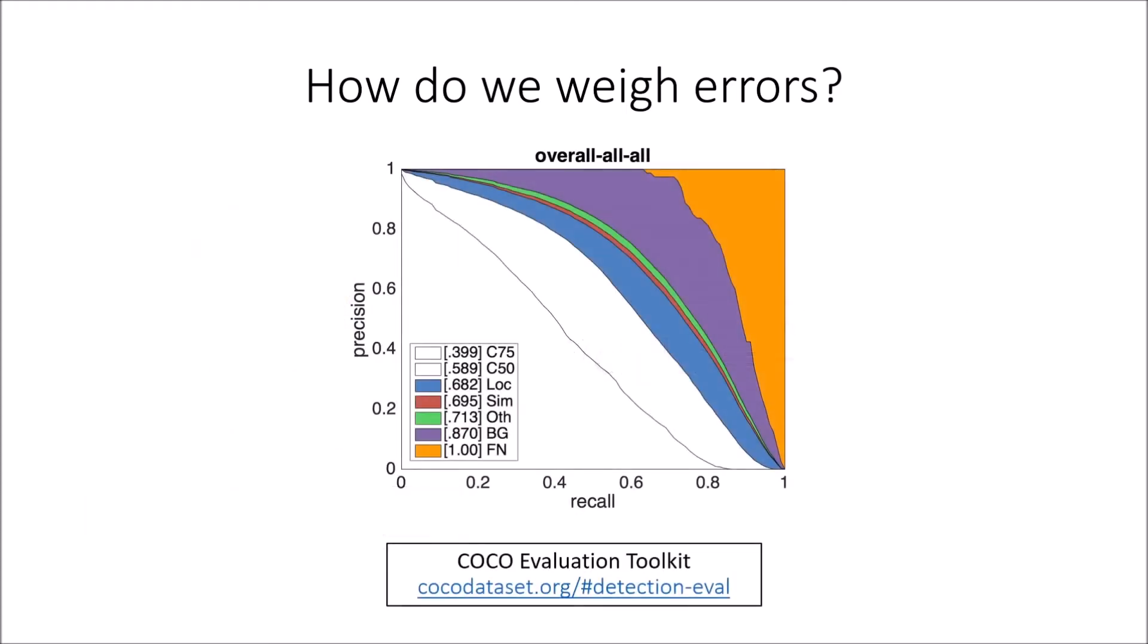The COCO evaluation toolkit, on the other hand, attempts to update Holm et al.'s work by representing errors in terms of their effect on the precision recall curve. However, the plots they produce are difficult to interpret, and more importantly, turn out to be drastically misrepresenting the importance of certain error types.